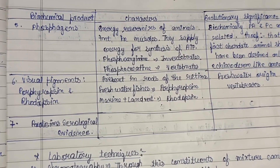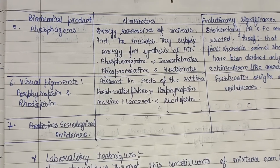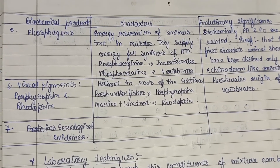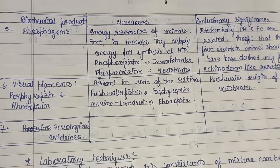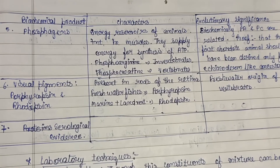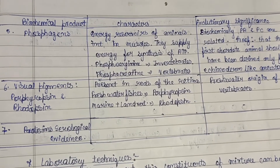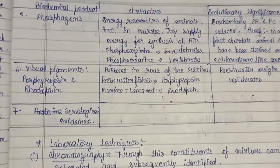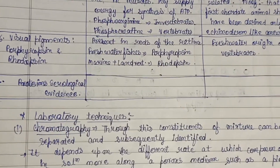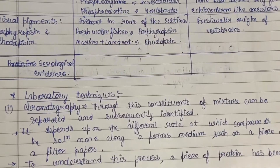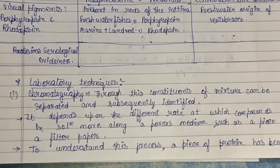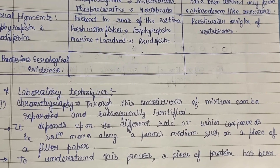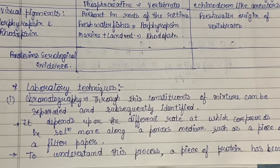Serological evidence — experiments made on the composition of the blood — also offer good evidence for evolution. There are also several laboratory techniques used in chemotaxonomy.